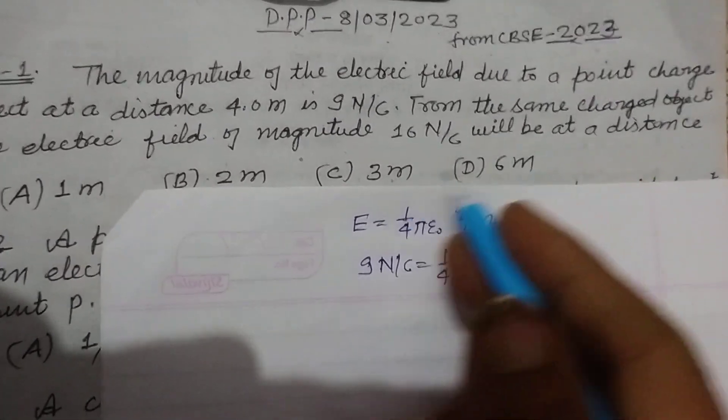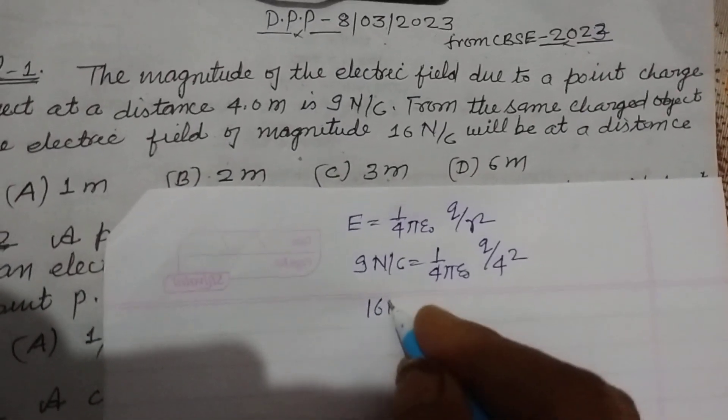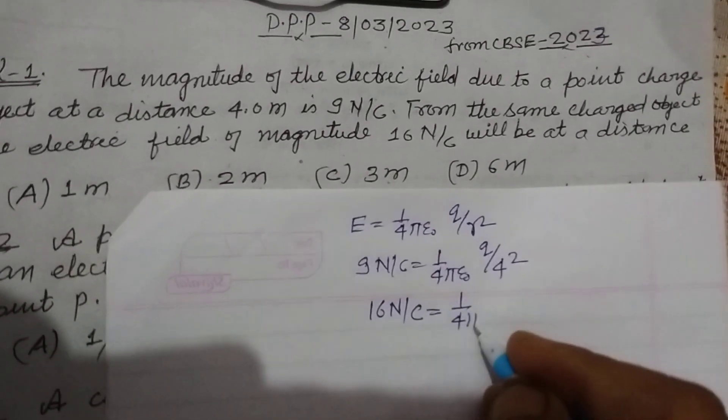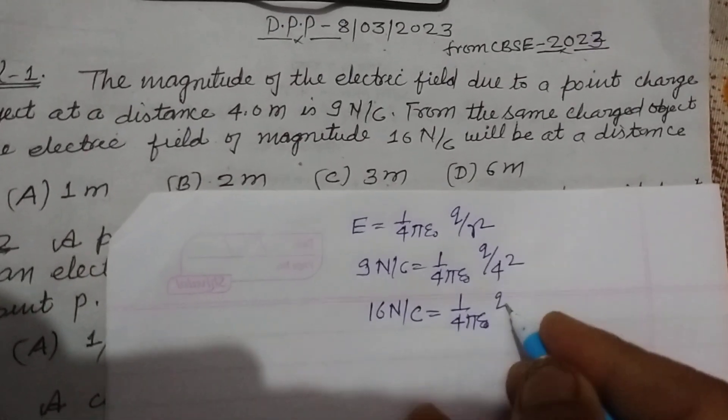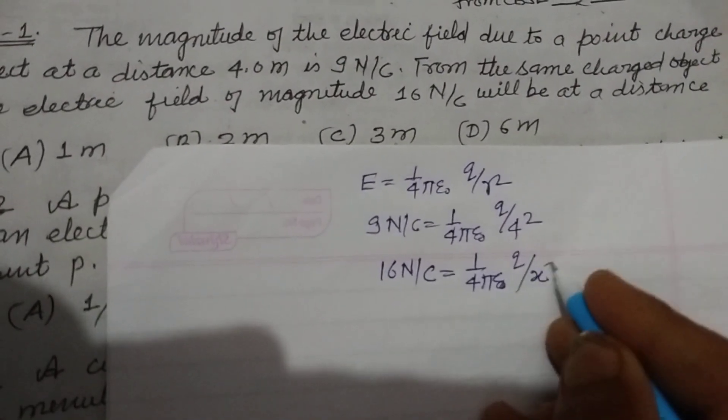Now from the same charged object, the electric field of magnitude, the next electric field is given 16 Newton per coulomb. This is 1 upon 4πε₀ q upon that distance is x².